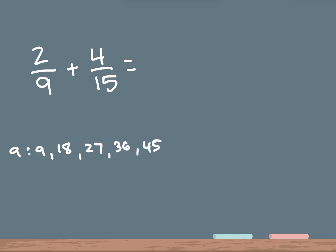Our second number is 15. So 15 times 1 is 15, 15 times 2 is 30, 15 times 3 is 45. Notice that I found my common denominator, which would be 45.